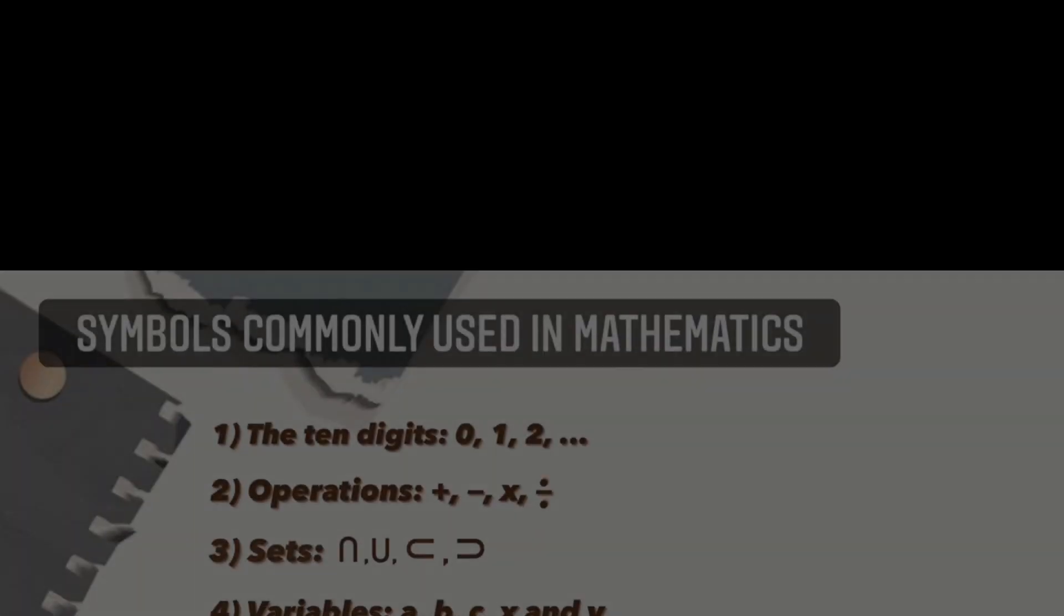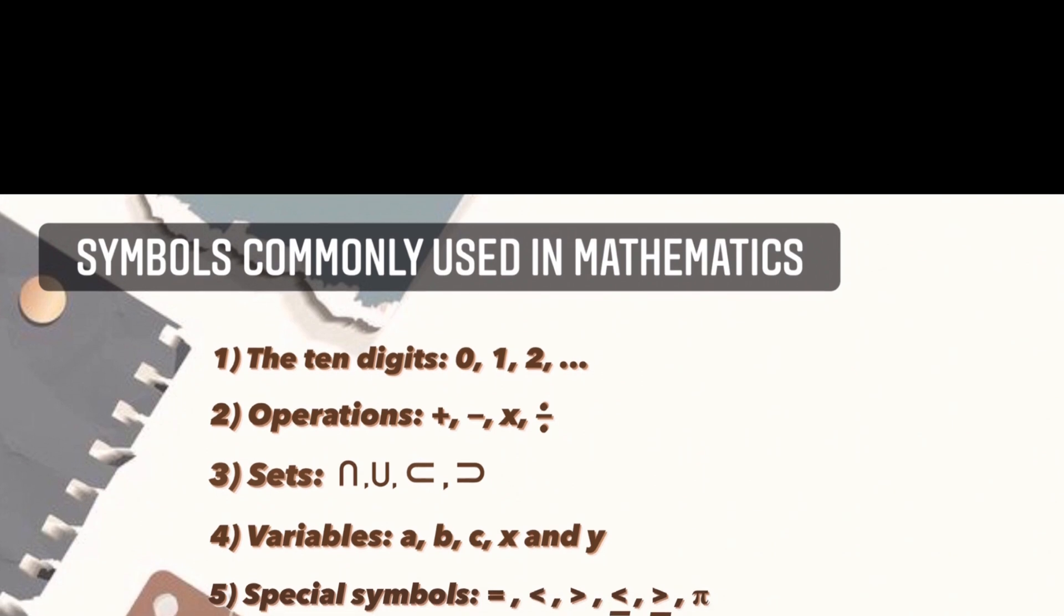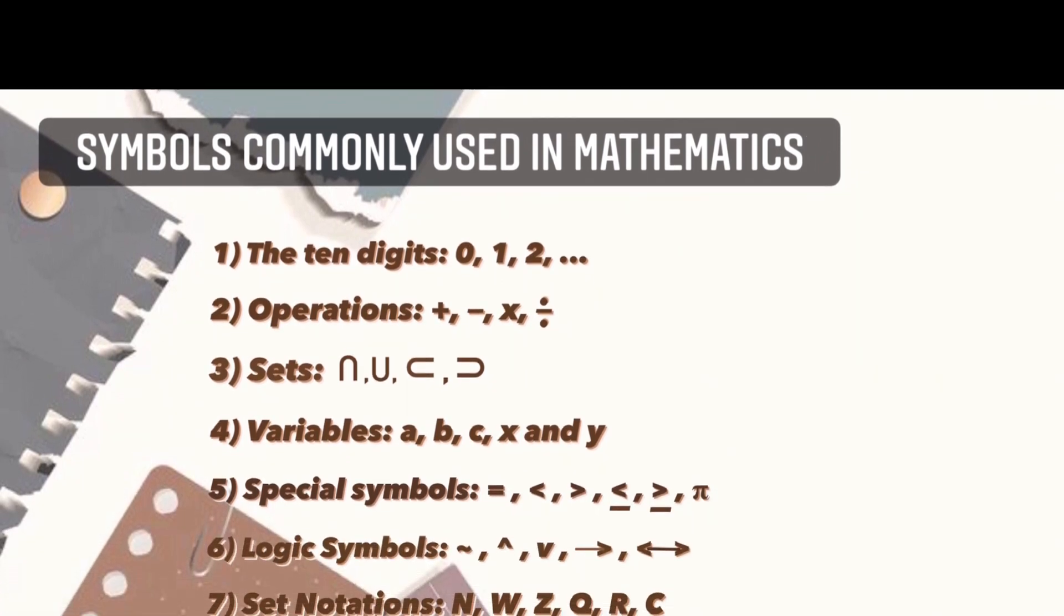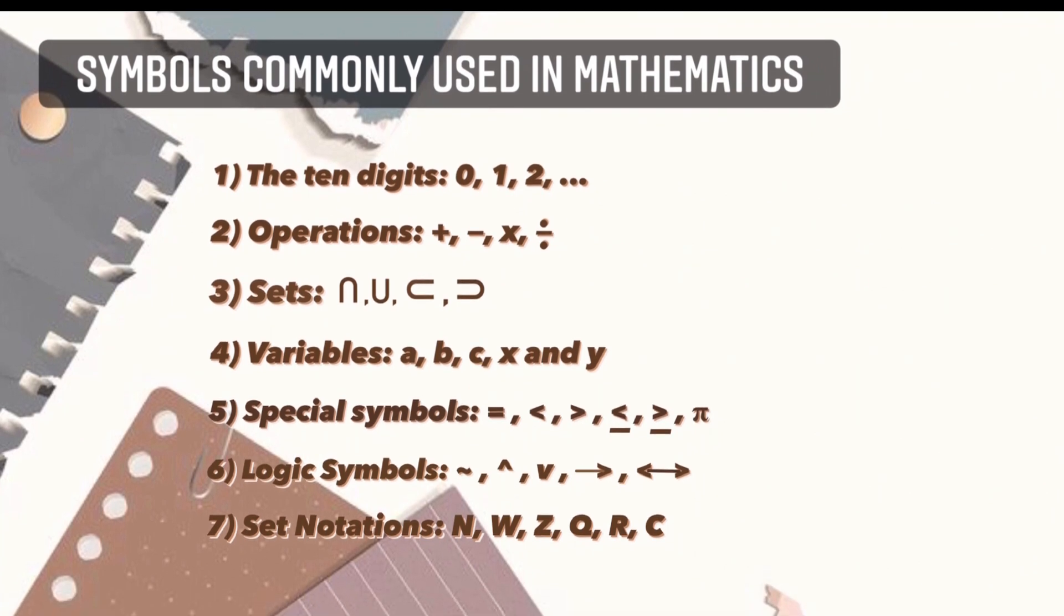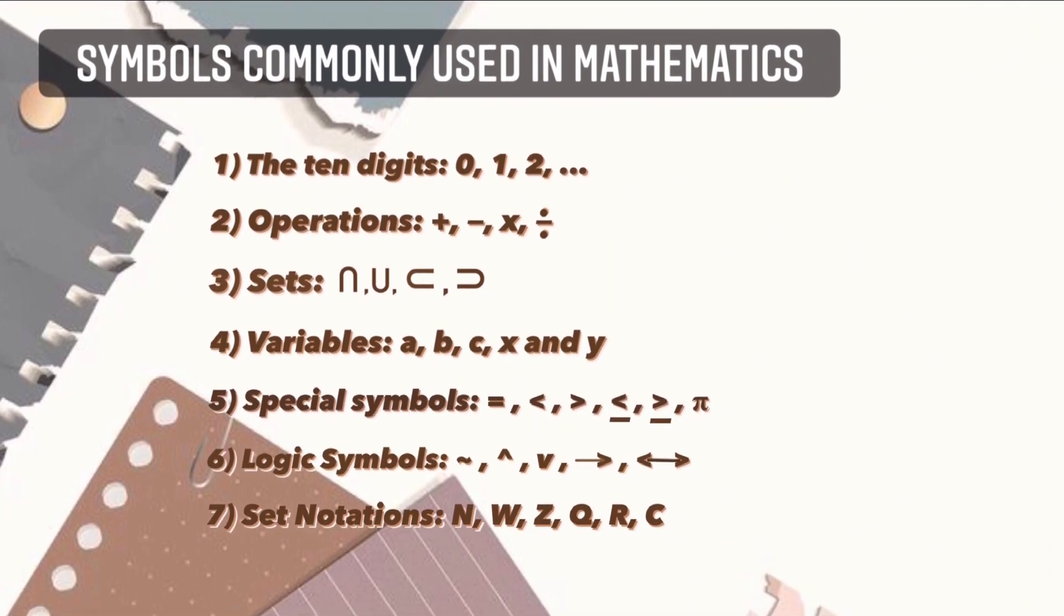Here are the symbols that are commonly used in mathematics. Number one is the ten digits: 0, 1, 2, 3, and so on. Second are the operations: plus, minus, multiply, and divide.